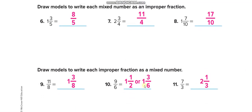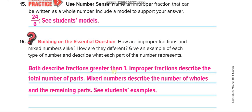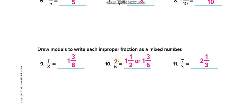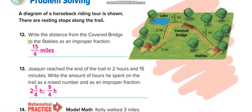For the practice section, improper fractions are converted to mixed numbers. For 11/8: one 8 fits, remainder 3, giving 1 and 3/8. For 9/6: one 6 fits, remainder 3, giving 1 and 3/6. Then simplify by dividing both by 3: 3÷3=1 and 6÷3=2, so the simplified answer is 1 and 1/2.